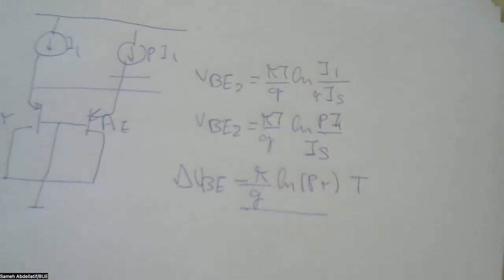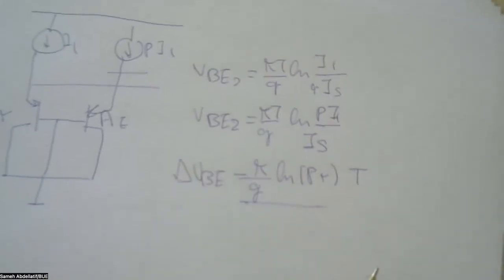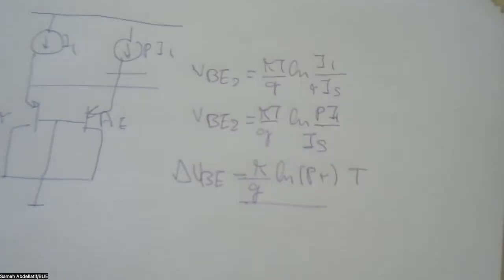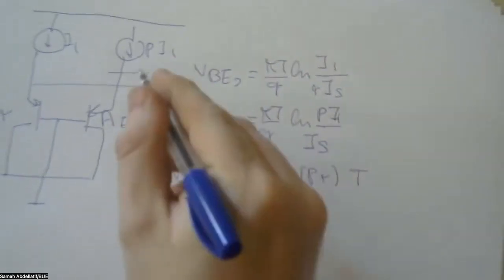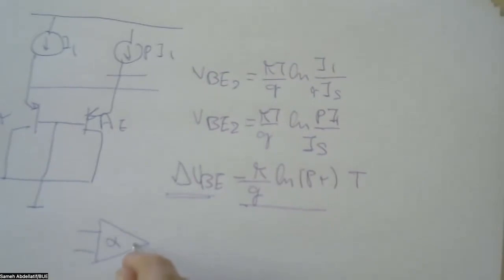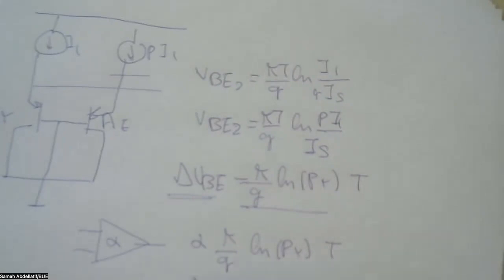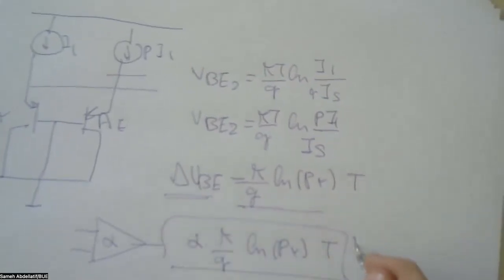There is another added difference: instead of using delta VBE directly, we multiply it by an amplification factor called alpha. So the output of this amplifier — which we call Vptat — will be alpha · (k/q) · ln(P·R) · T. This is the first branch for what we call the PTAT voltage — Proportional To Absolute Temperature.